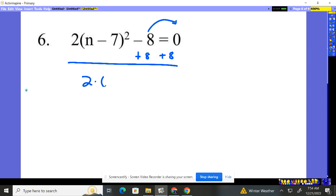So we're going to have two times n minus seven squared equals eight. Now I know two times four gives me eight, so I know this n minus seven squared bit is going to come out to be a four.